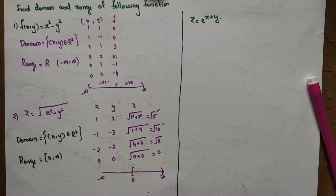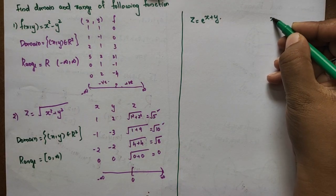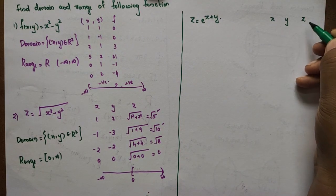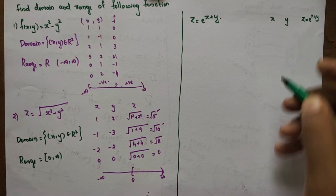Let's go to the first problem. Z is equal to e raised to x plus y. Here x and y are the inputs, and z is our output.